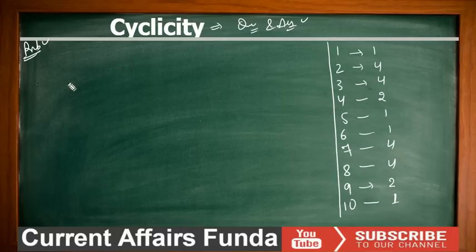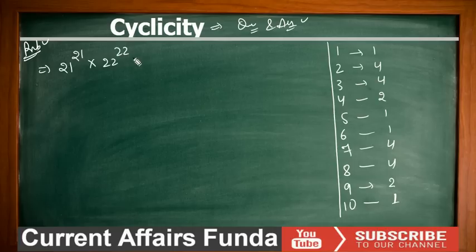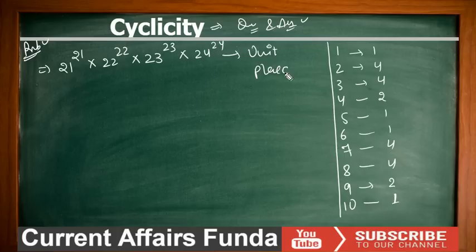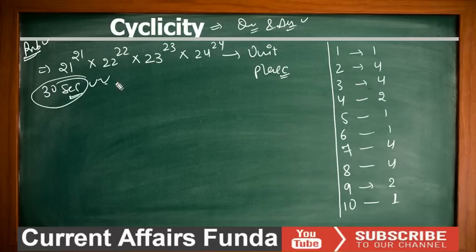Our first question is: find the unit place of 21^21 × 22^22 × 23^23 × 24^24. Think about it for 30 seconds and try to solve it yourself. I'll also show you how to solve this in just 15 seconds.